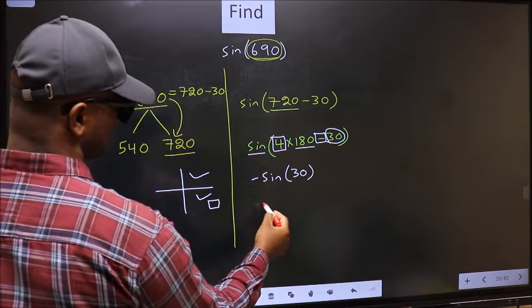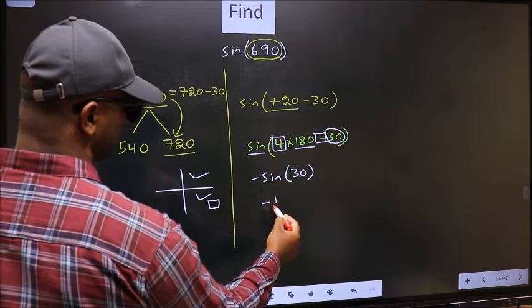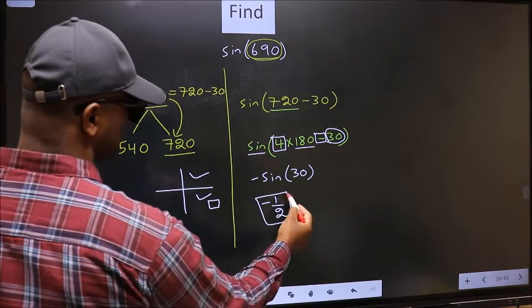So we should put negative. So negative sin 30 is negative 1 by 2. This is our answer.